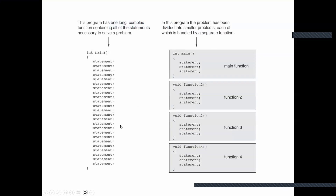Here's an example: we have a very large, complex problem. We could solve the whole problem in the main function — execution does take place in the main function — but this may be complex or very difficult to maintain. So instead, we can break the program into three sections.